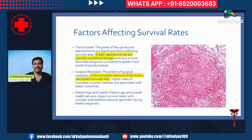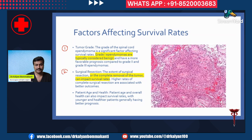What are the important factors affecting survival rates? First is the tumor grade, which is the most important factor. Equally important is surgical resectability. Third is the size of the tumor, which also matters significantly. And fourth is the patient's health and age.